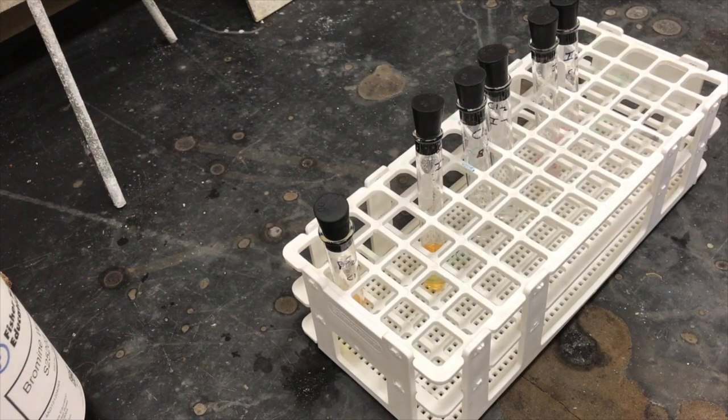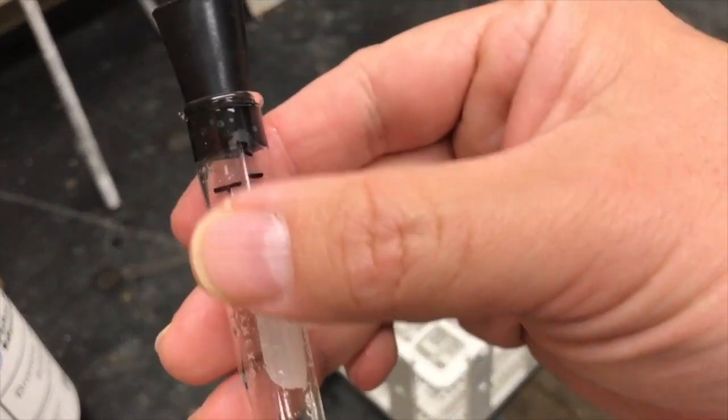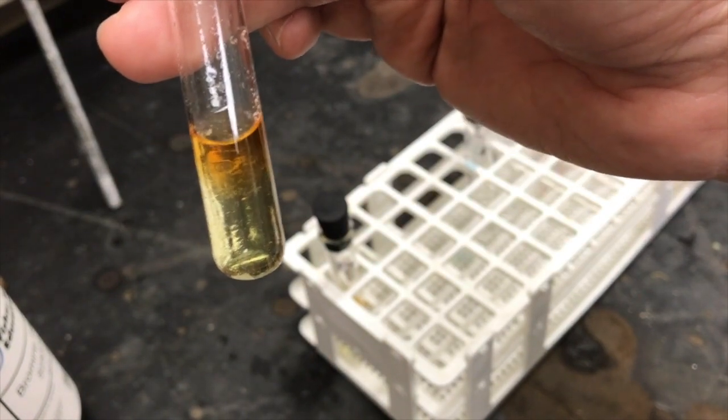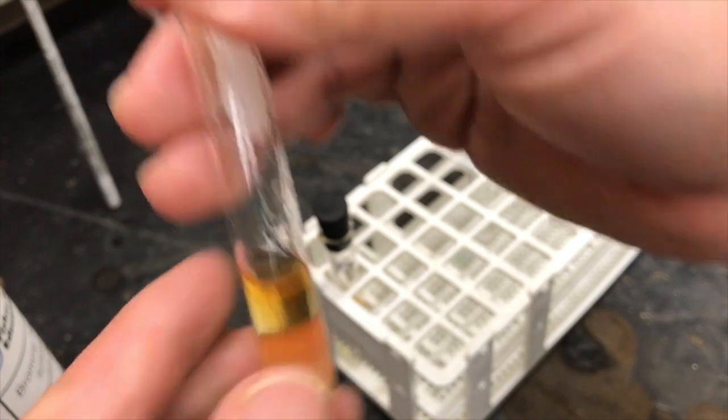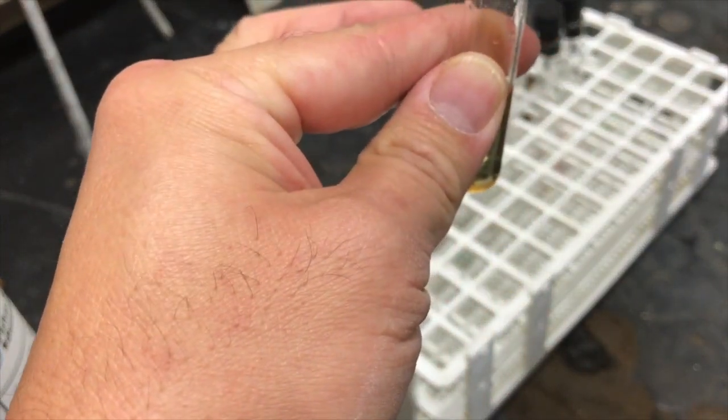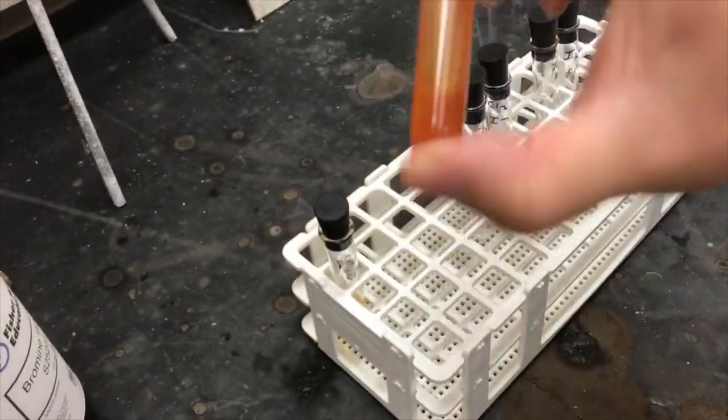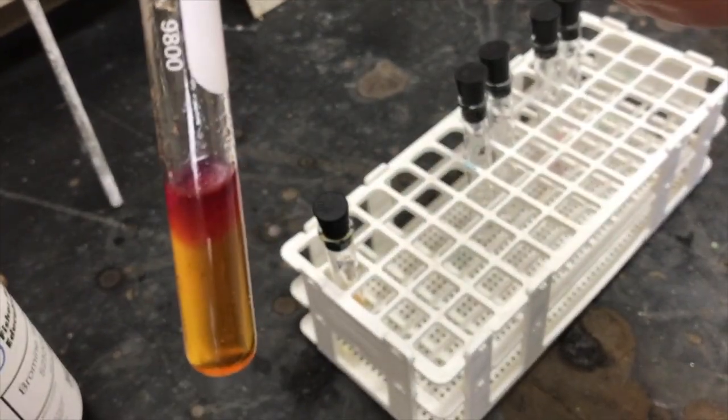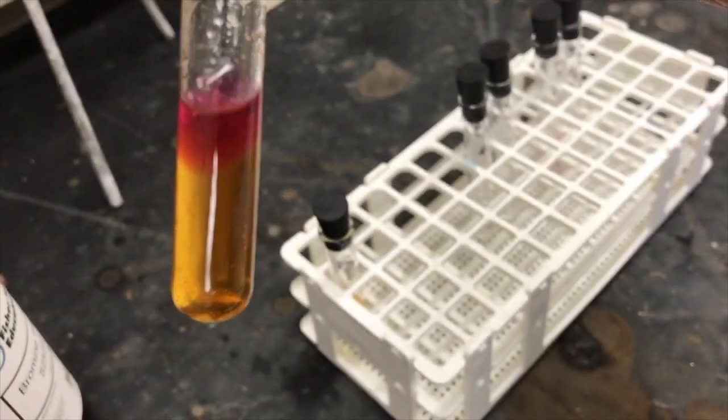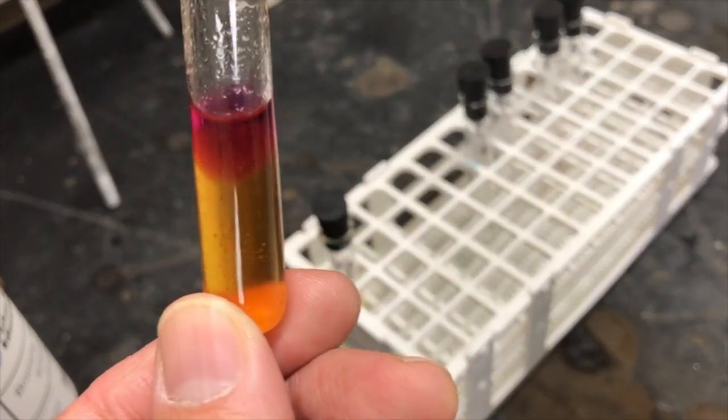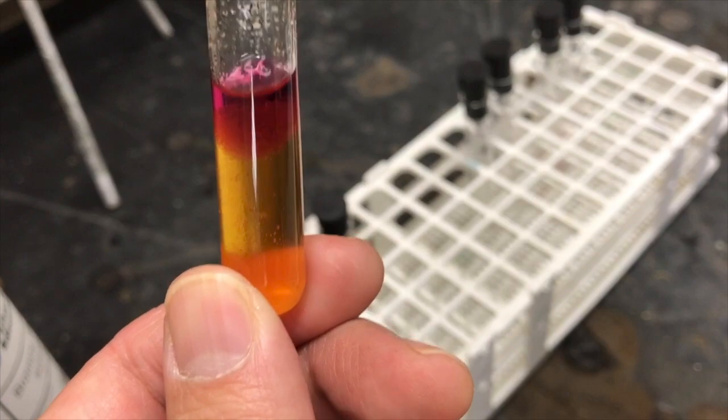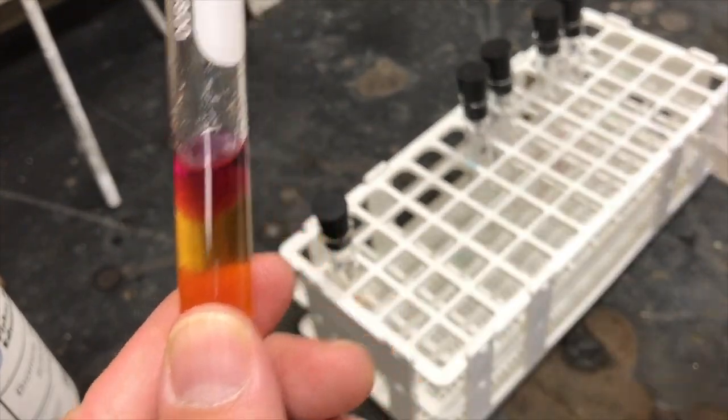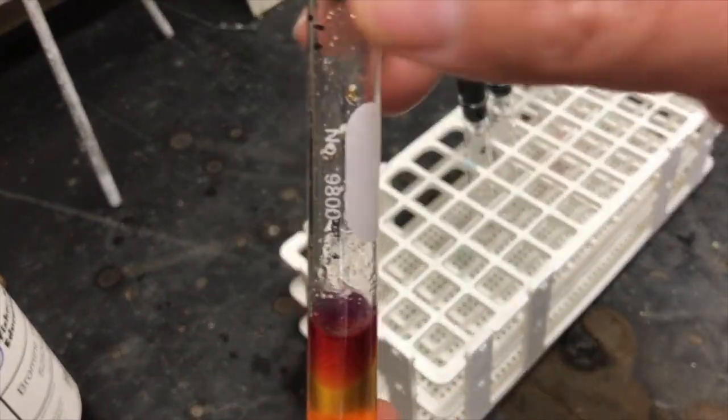Next we're going to try the bromine with sodium iodide. Again two layers because there's a hexane layer and an aqueous layer. And there's a change we now see pink layer on top in the hexane layer there's pink and we see kind of an orangish aqueous layer on the bottom. So again this was sodium iodide with aqueous bromine.